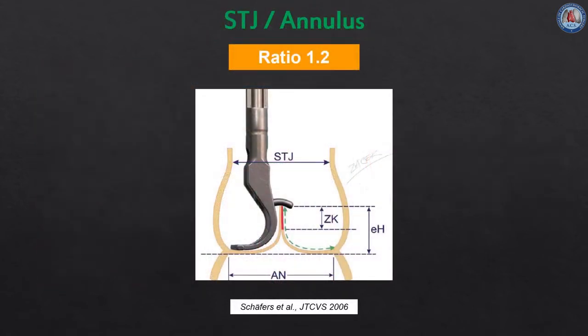Large pooled echocardiographic studies have shown that the mean STJ diameter is 27.2 mm and that it is larger than the aortic annulus, with a mean of 22.3 mm. This gives an STJ to annulus ratio of 1.2. Therefore, an aortic annulus larger than 25 mm and an STJ diameter larger than 30 mm are deemed as functionally dilated.